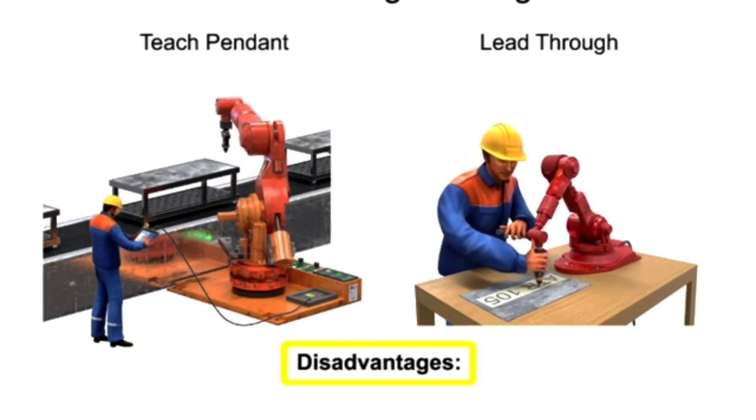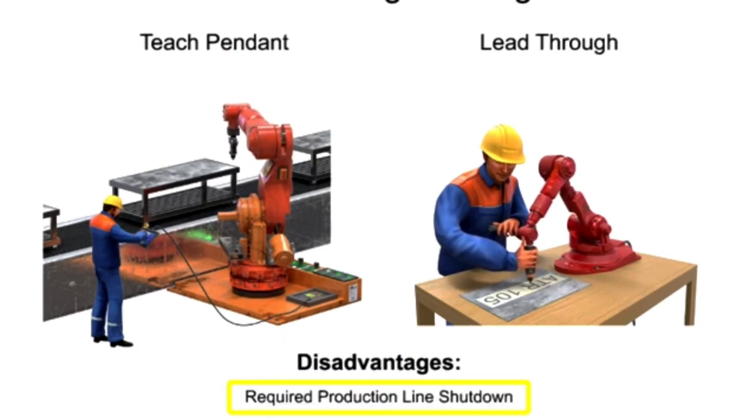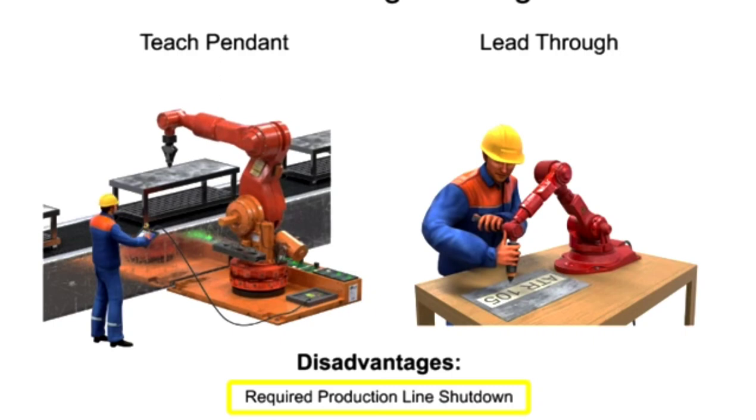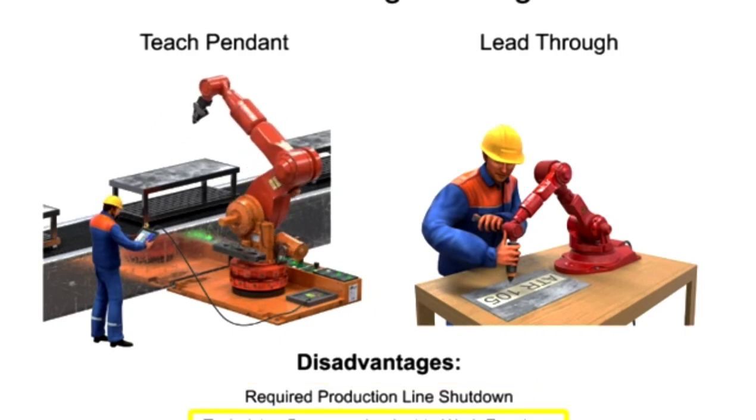The disadvantages of online programming are the requirement to shut down the production line while programming is occurring, and that the technician typically has to be in the work envelope while the robot is operating, which exposes them to greater risk of damage.